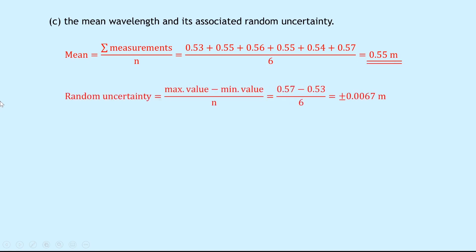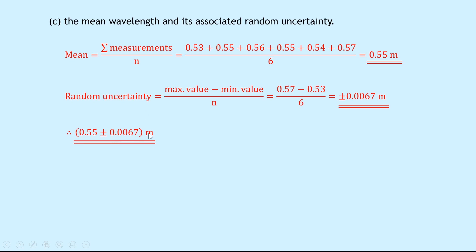The random uncertainty then is equal to maximum value minus the minimum value over n, which is 0.57 take away 0.53 over 6, which gives us plus or minus 0.0067 meters. Again, two significant figures for a random uncertainty. So writing this in absolute form, even though the question didn't ask for it, we get 0.55 plus or minus 0.0067 meters.